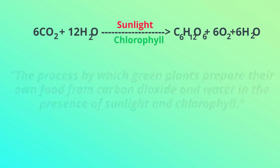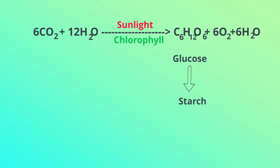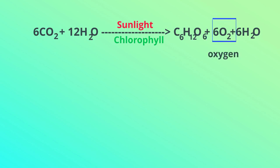The food prepared is in the form of glucose, which provides energy for the plant. Excess glucose is converted into starch and is stored in the leaves of the plant. During this process, oxygen is given out by plants, which is used by other organisms for respiration.